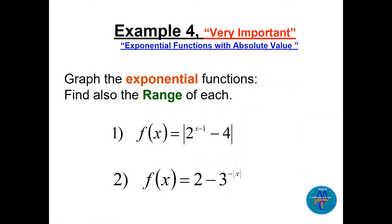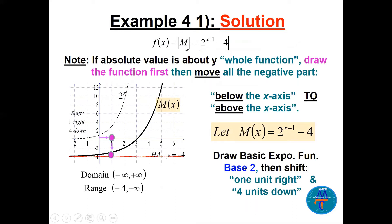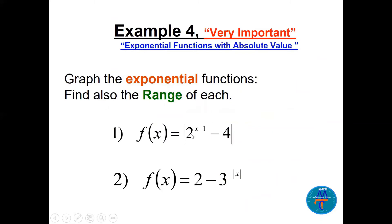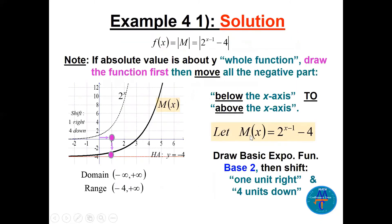Now let's look at two important types of graphs involving absolute value. The first is the absolute value of the whole function. The method: draw the function inside the absolute value normally first. For example, let M(x) = 2^(x-1) - 4 — the function inside the absolute value.